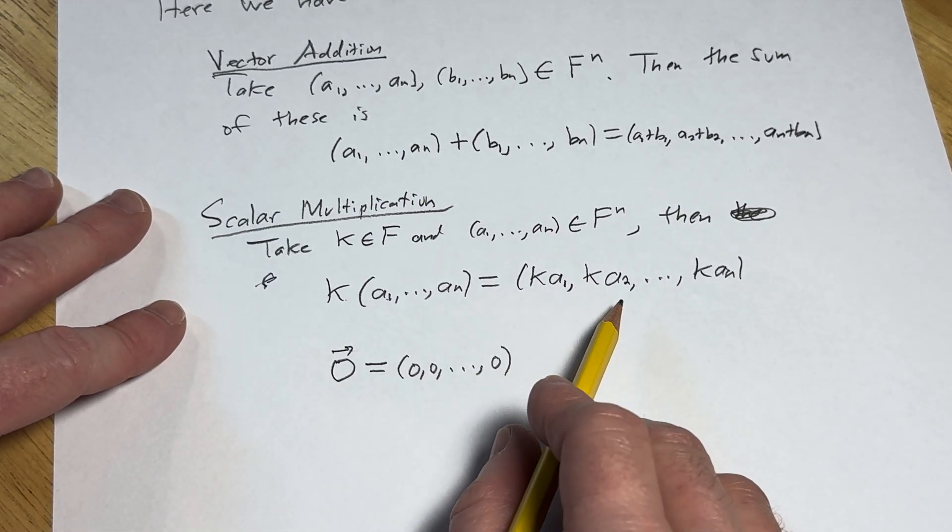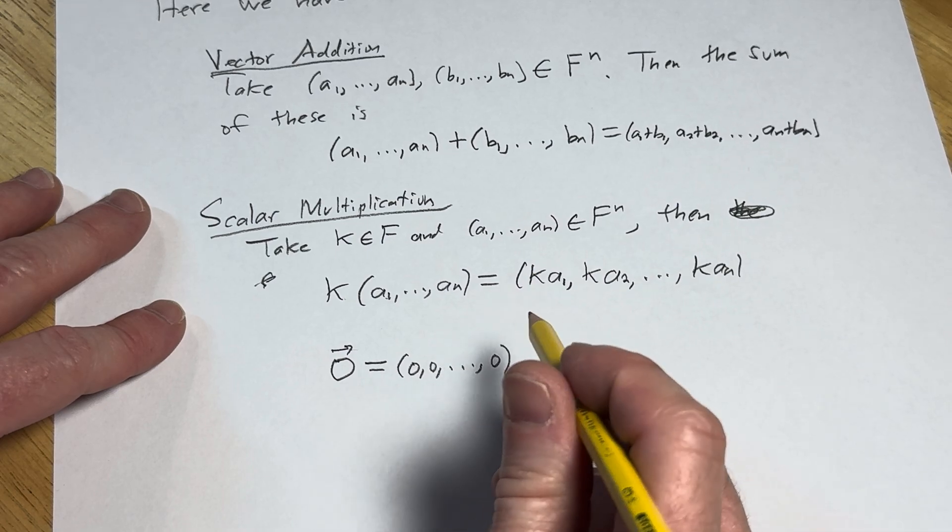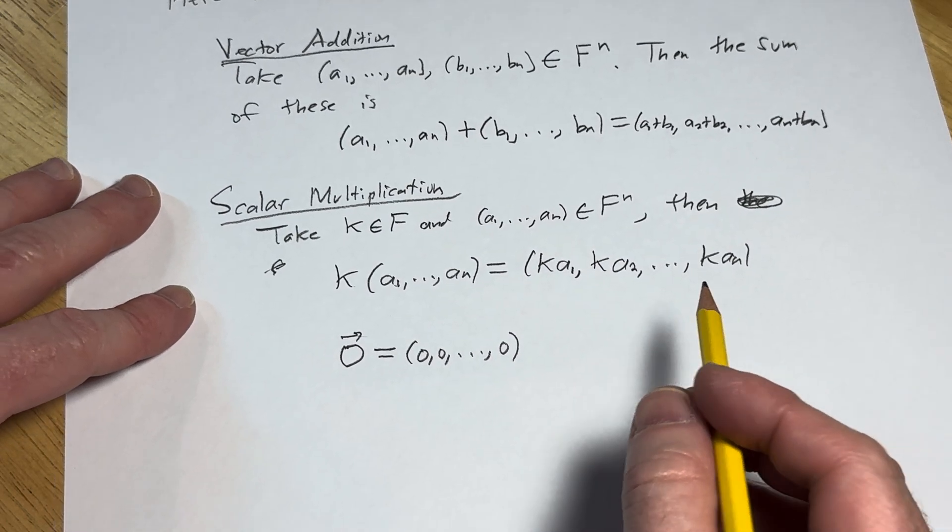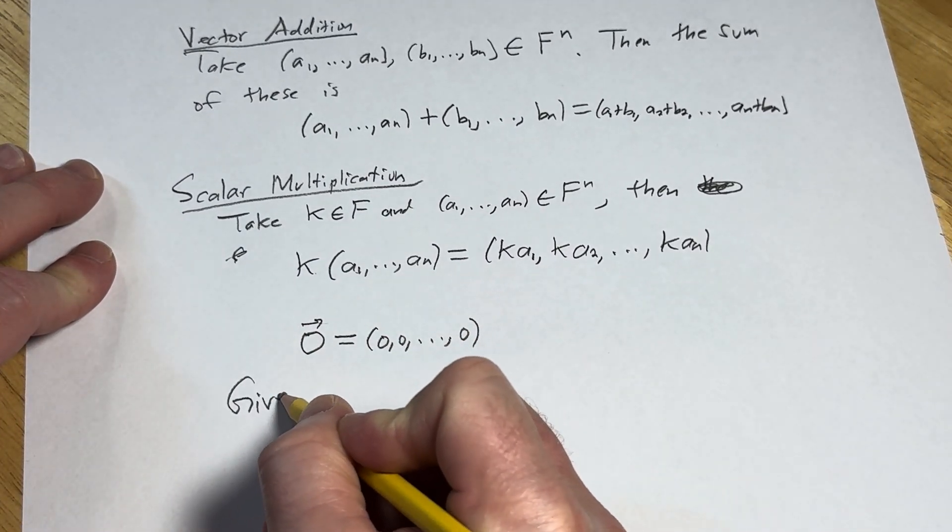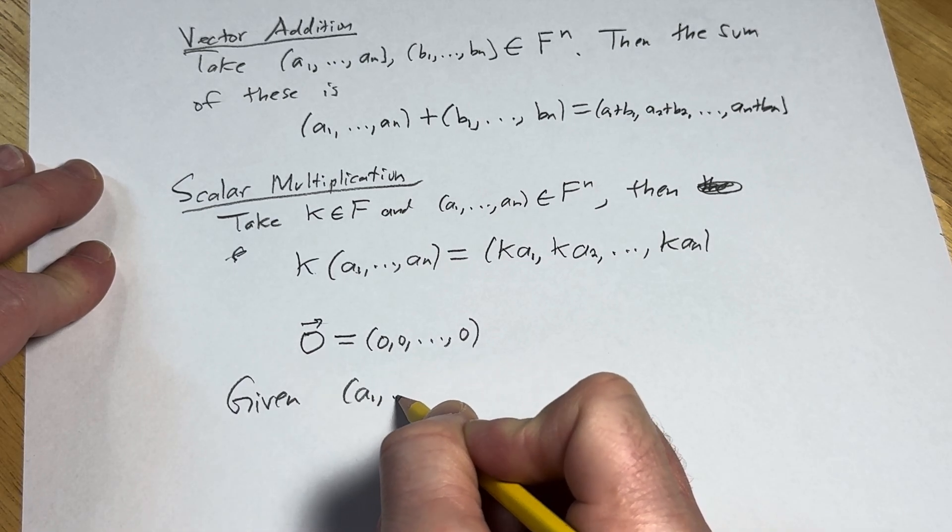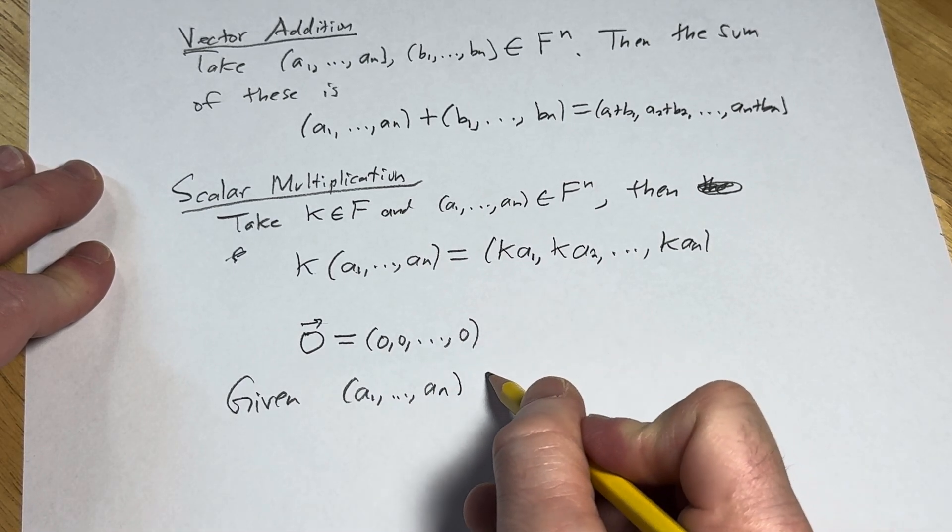And given any element, you could find an inverse element. So given (a_1,...,a_n) in F^n,